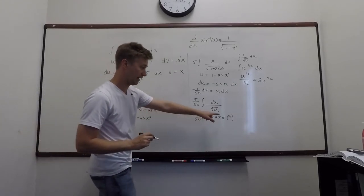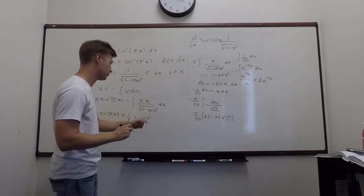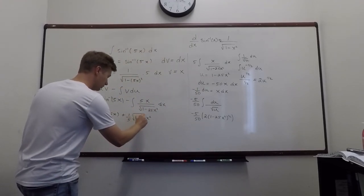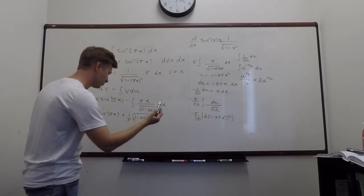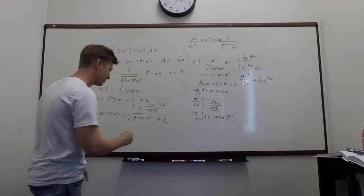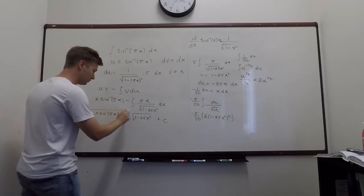So this is 1 over 5 times 1 minus 25x squared, and to the 1 half power, right? So I can rewrite 1 half power as a square root. Okay, so there's no more integrals, so then you put your plus c at the end, and that will be the final answer.